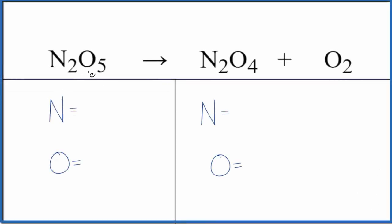Let's balance the equation for the decomposition of N2O5 into N2O4 plus O2. So we have dinitrogen pentoxide decomposing into dinitrogen tetroxide and oxygen gas.